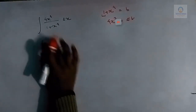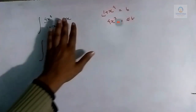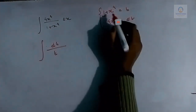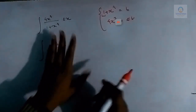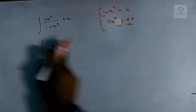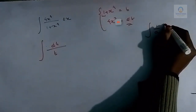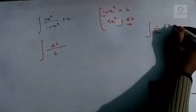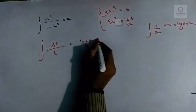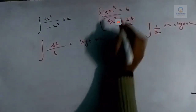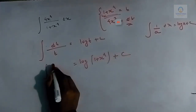The integral becomes the integral of (1/t) dt. We already know the formula: integral of (1/x) dx = log x + C. Applying this formula, the result is log t + C. Replacing t back with 1 + x⁴, the final answer is log(1 + x⁴) + C.